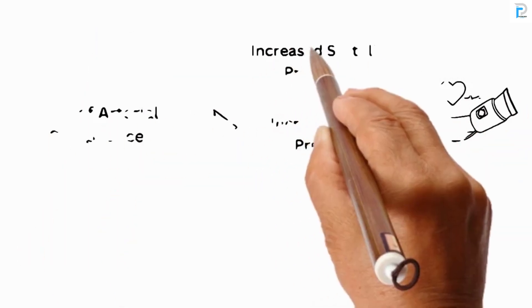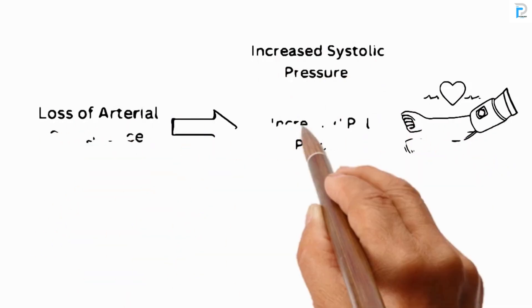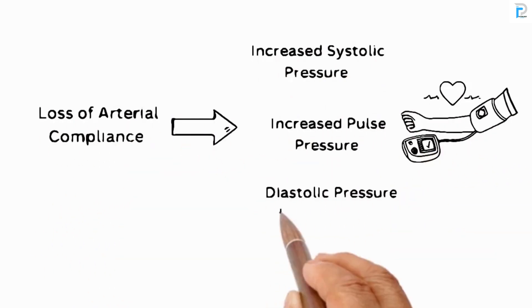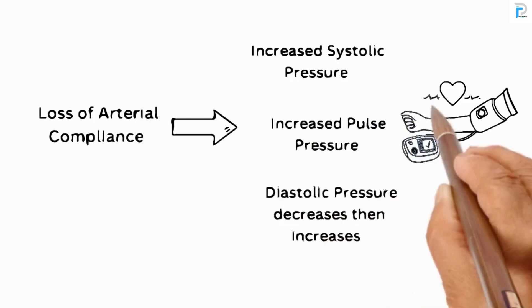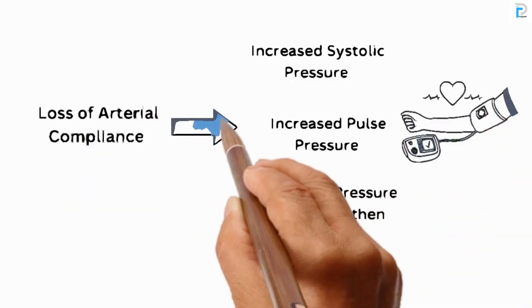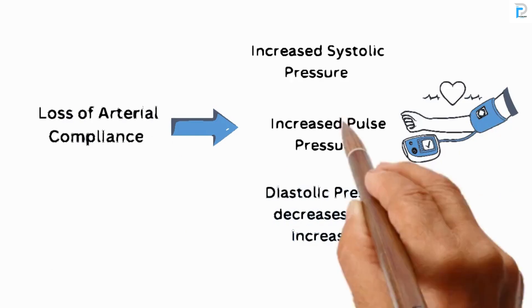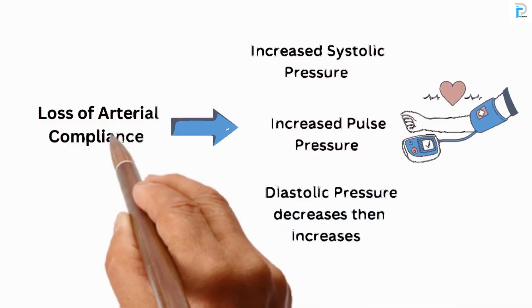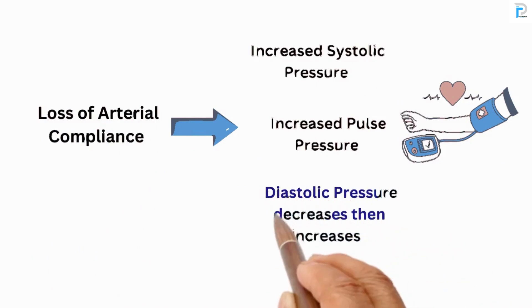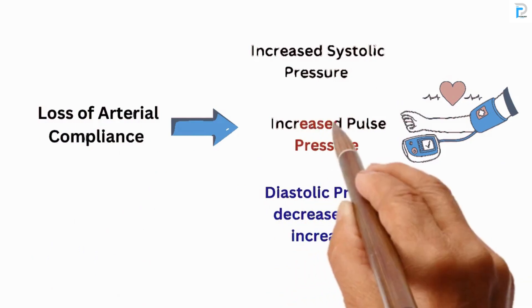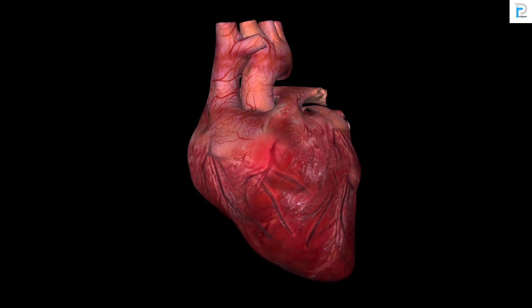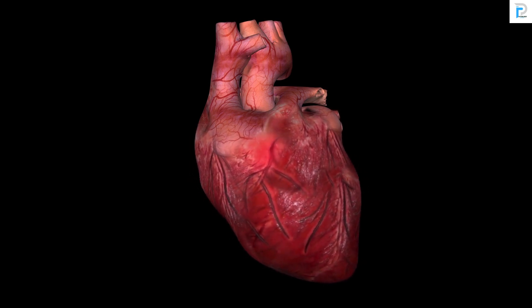As arteries become less compliant, blood pressure increases. Systolic pressure increases because the arteries are unable to expand. Diastolic pressure initially decreases but later increases due to a rise in peripheral resistance. The difference between systolic and diastolic pressure — known as pulse pressure — also increases. So systolic, diastolic, and pulse pressure all increase.